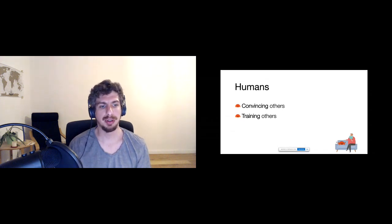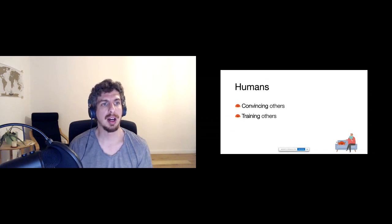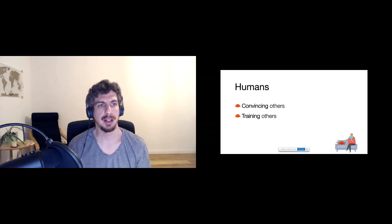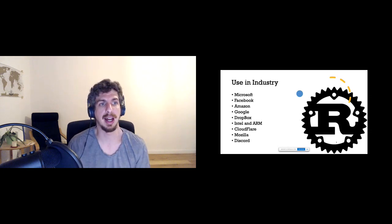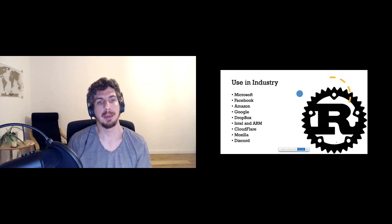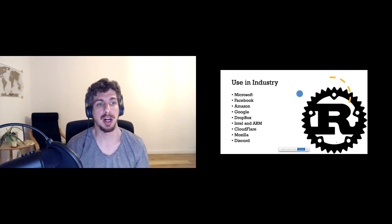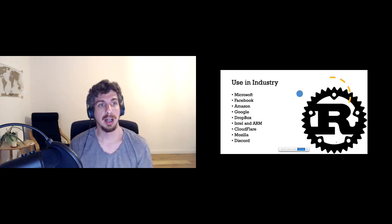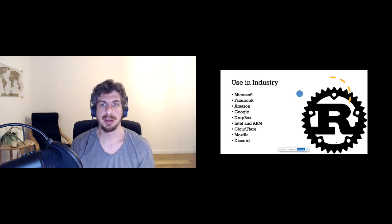A little bit about Rust's use in industry: Microsoft is starting to use it; Facebook seems to be adopting it quite a bit; Amazon is using it for the Lambda runtime and has said stuff inside EC2 is also written in Rust; Google has adopted it; Dropbox has rewritten their file sync engine in it; Intel and ARM are both investigating it; Cloudflare is a huge user; Mozilla, the original creator of Rust, is still using it quite a bit; and companies like Discord as well. There is adoption of Rust happening and we definitely hope to be at the forefront of that.